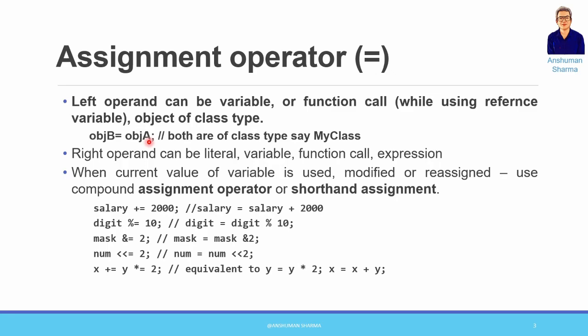For object assignment, we need to ensure that object A's data members and object B's data members are compatible — that is, both must be of the same class type. This is an important requirement when assigning one object to another.